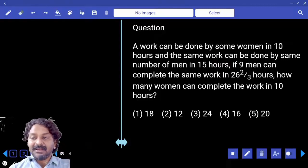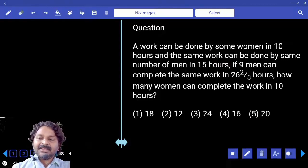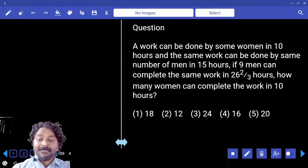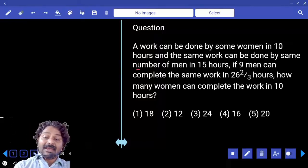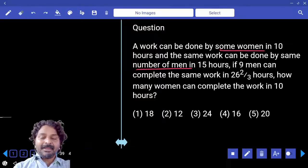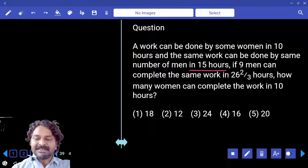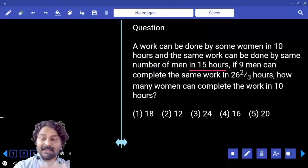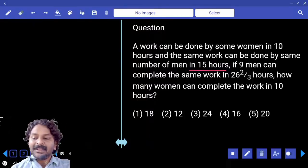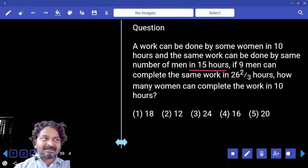A work can be done by some women in 10 hours and the same work can be done by same number of men. Earlier we have women, now we have men. And men can complete the work in 15 hours. If 9 men can complete the same work in 26 2 by 3 hours, how many women can complete the work in 10 hours?